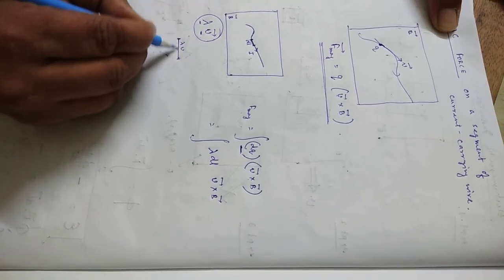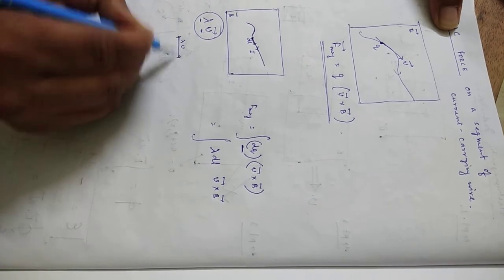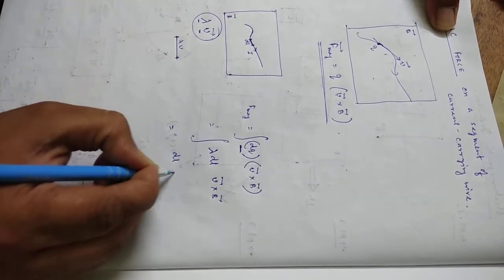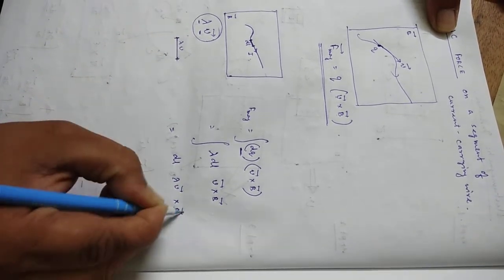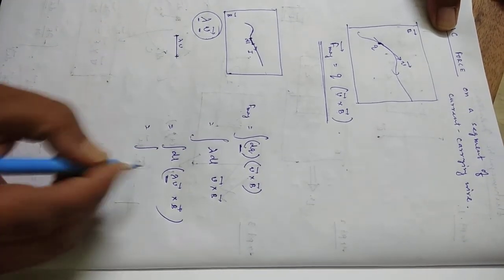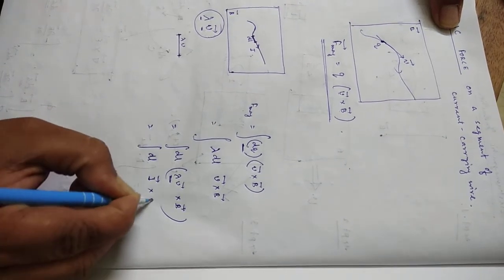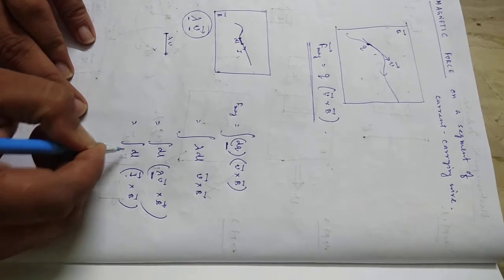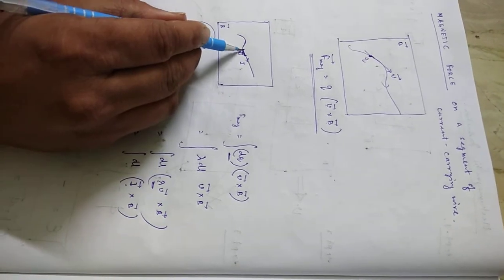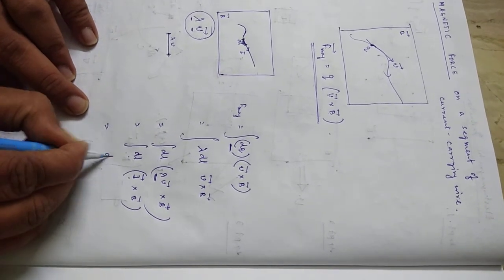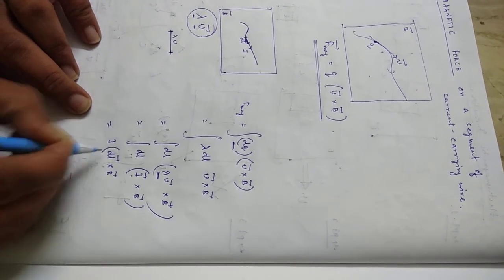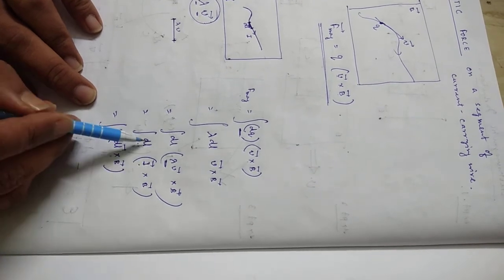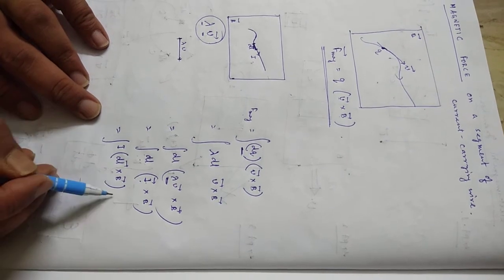So V into lambda gives the total amount of charge passing per unit time, which means lambda into V is nothing but the current I. So I can write the force as lambda V cross B integrated over DL. Lambda into V equals I. Now you can understand that the direction of current and the direction of the DL vector are the same, so I can interchange the vector sign. The result becomes I times DL cross B — I have just interchanged the vector sign from current to DL because both have the same direction, and the result does not change.